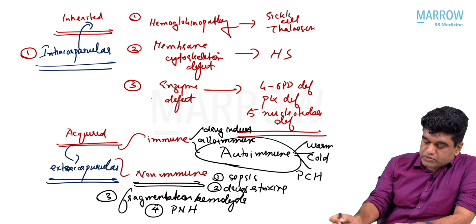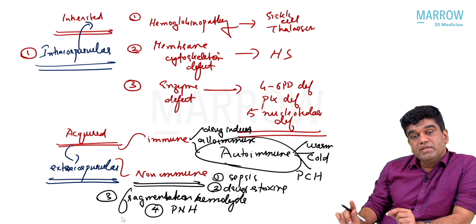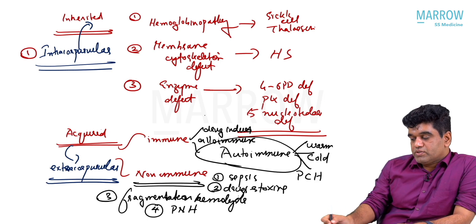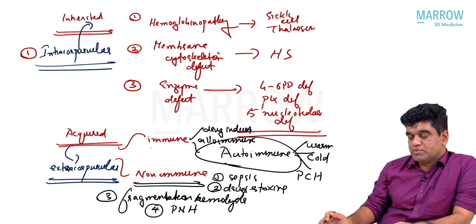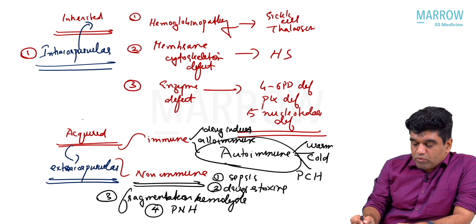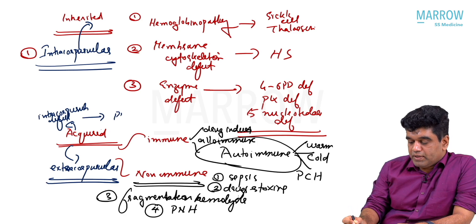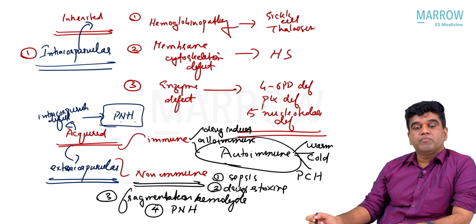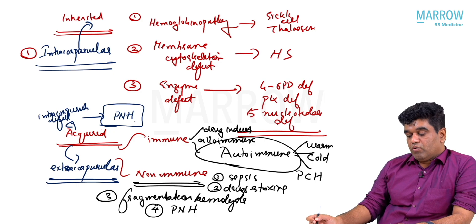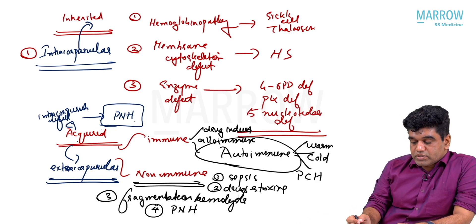The only acquired cause where there is an intracorpuscular defect is PNH — the only acquired intracorpuscular defect equals PNH. All the acquired causes are extracorpuscular and all the inherited causes are intracorpuscular. The only exception to an acquired cause being extracorpuscular is PNH; all other acquired causes are extracorpuscular.